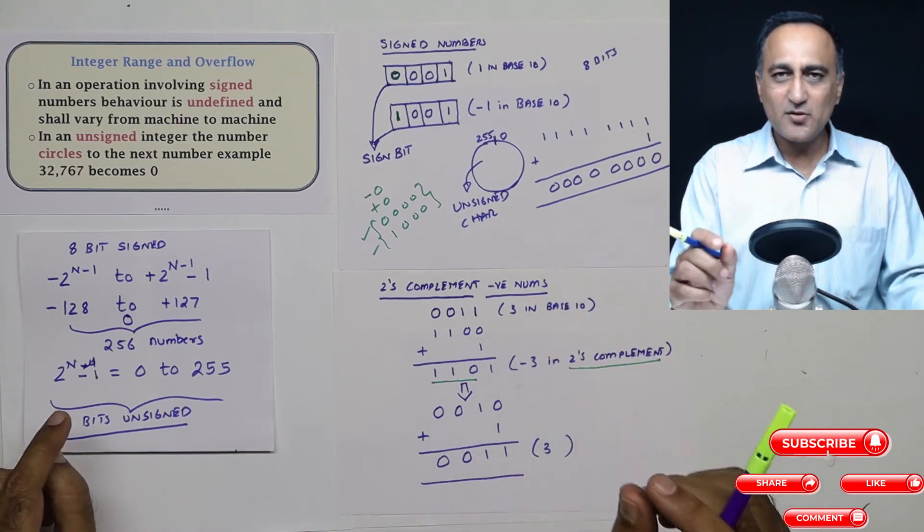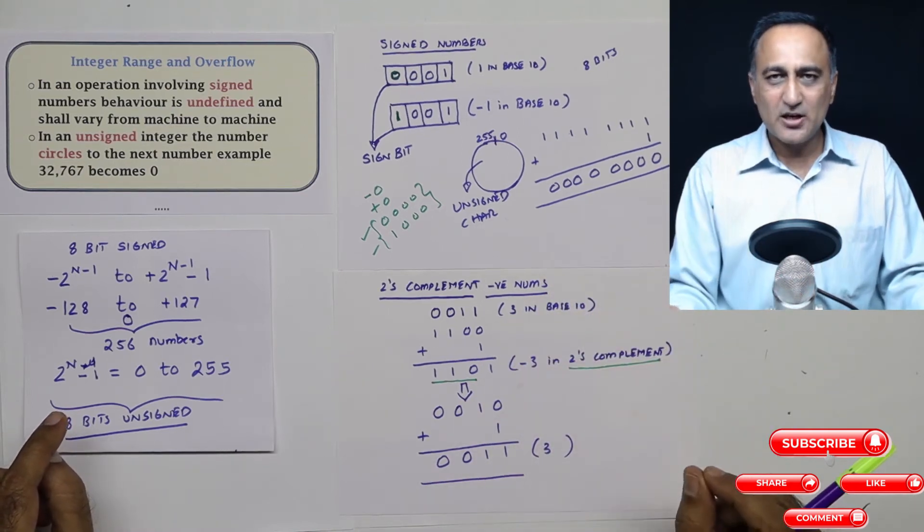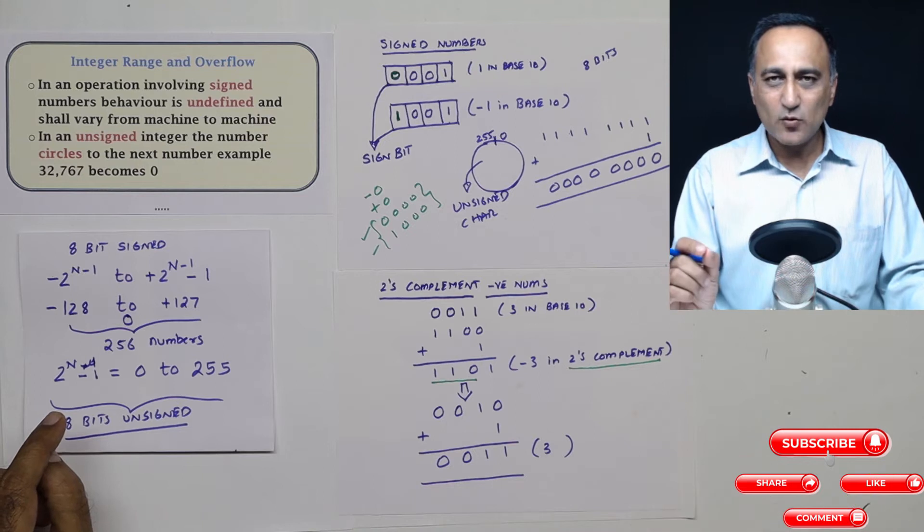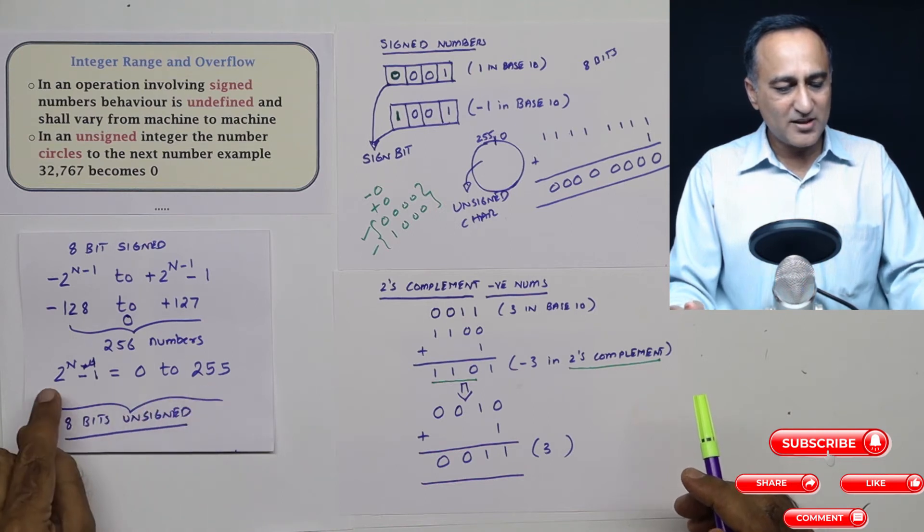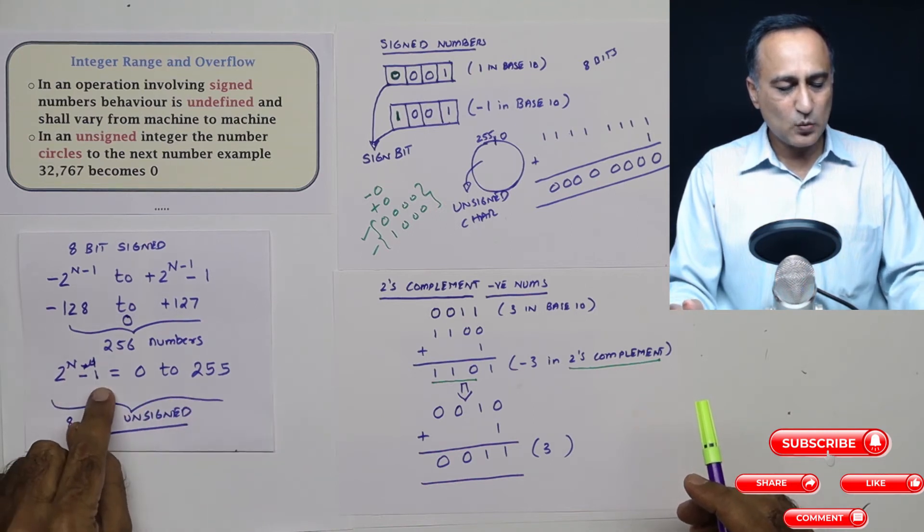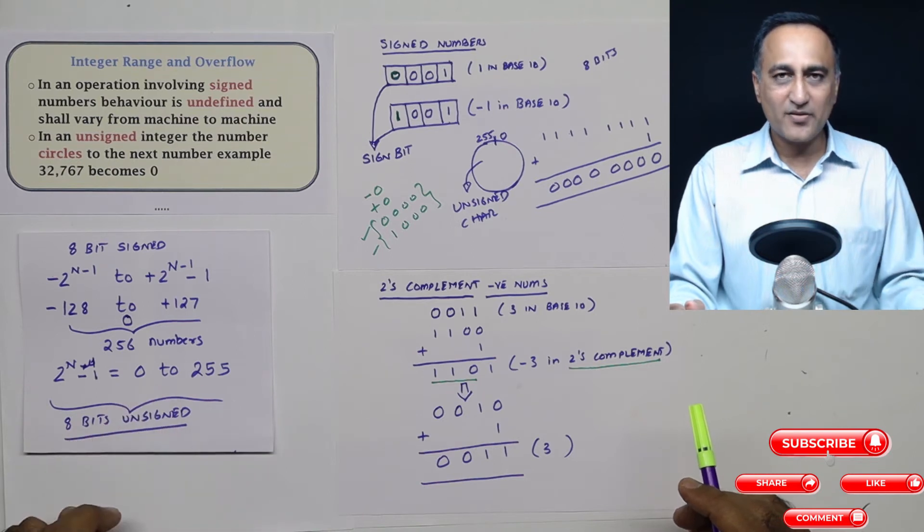Suppose I have an integer whose width is only eight bits. What is its range if it can only store positive numbers, or if it is an unsigned int? It can store from zero to 255, that is two raised to n minus one. So its range is zero to 255.